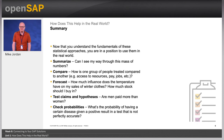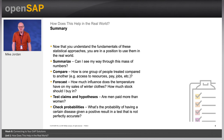To summarize: now that you understand the fundamentals of these statistical approaches, you are in a position to use them in the real world. To summarize — can I see my way through these massive numbers? To compare — how is one group of people treated in comparison to another, e.g. access to resources, pay, jobs, etc. To forecast — how much influence does the temperature have on my sales of winter clothes, and how much stock should I buy? To test claims and hypotheses — for example, are men paid more than women? To check probabilities — what is the probability of having a certain disease given a positive result in a test that is not perfectly accurate?